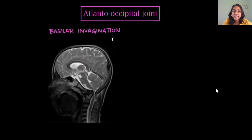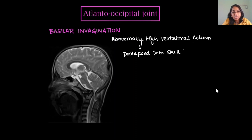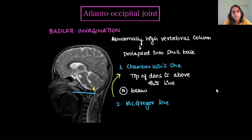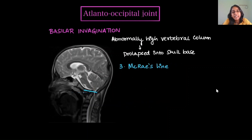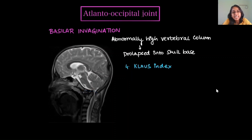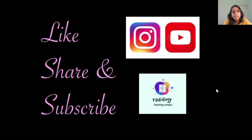Basilar invagination involves an abnormally high vertebral column invaginated into the foramen magnum, prolapsing into the skull base. All the lines are applied: Chamberlain's line from posterior hard palate to opisthion — the tip of the dens is above this line, where normally it should be below. McGregor's line — the line along the foramen magnum — the tip of the dens is above this line, where normally it should be 5 mm below. For Klaus index, normally the dens is 40 to 41 mm below the twinning line; if it is within 30 mm, that indicates basilar invagination.